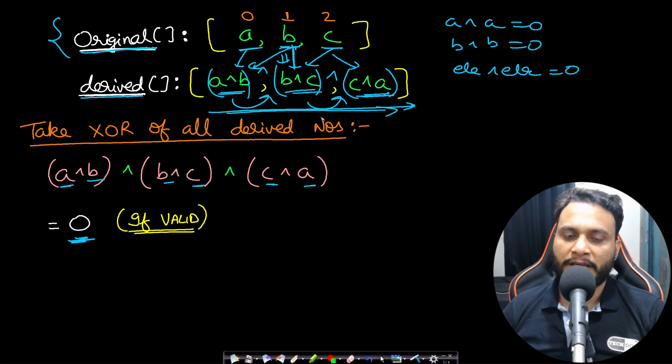So if you take XOR, every element will occur in pairs, and that is why each of them will cancel out each other and you will always get 0. Therefore, we can just iterate over the entire array and get the XOR value. If the XOR value is 0, then it is valid; otherwise it is not valid.